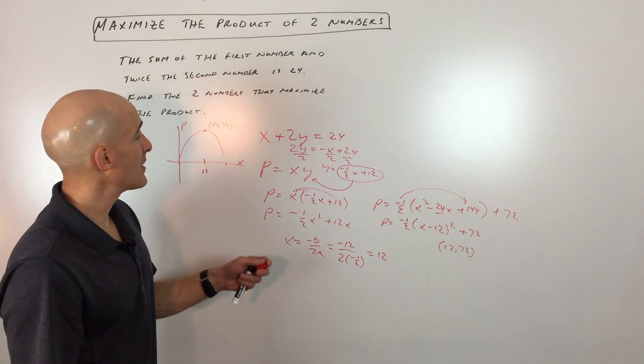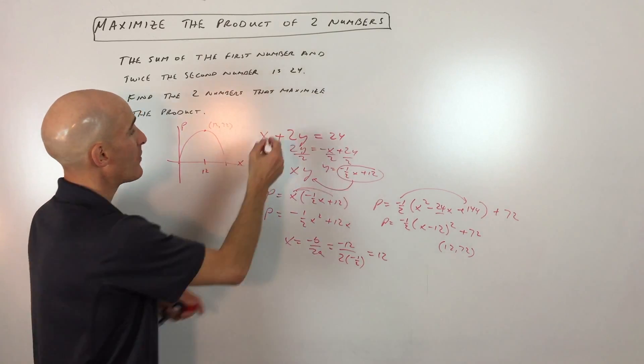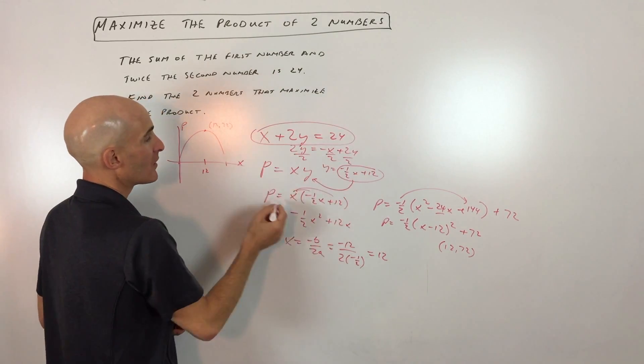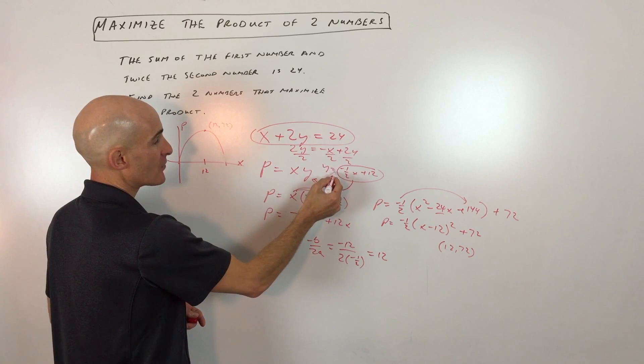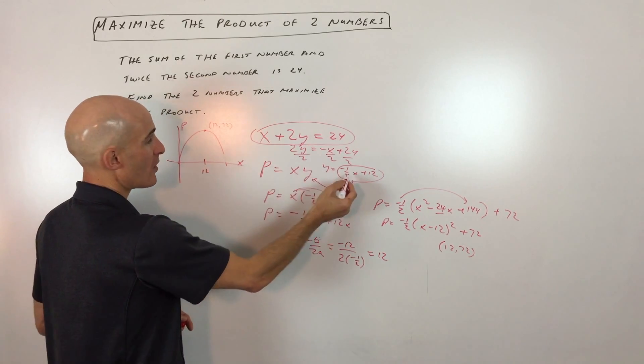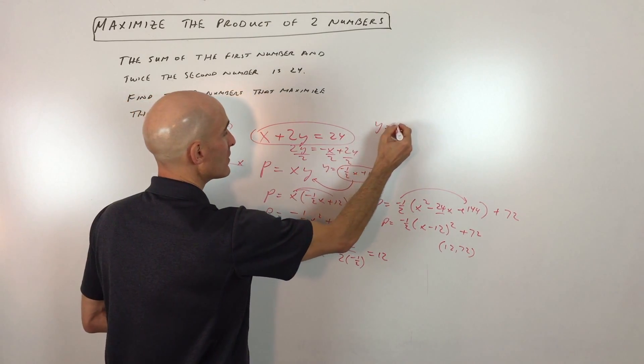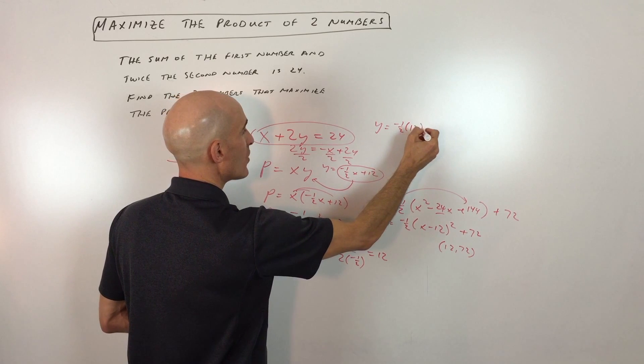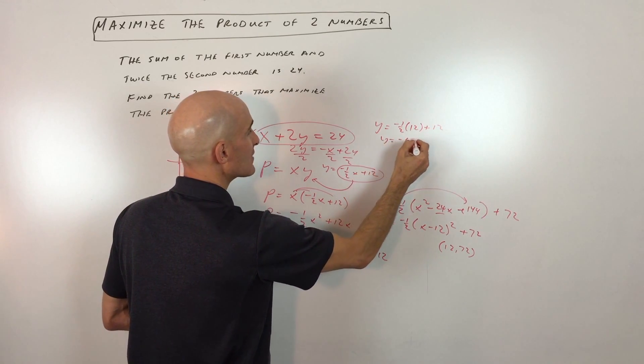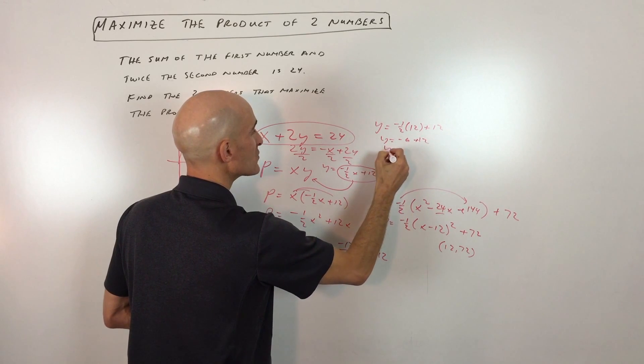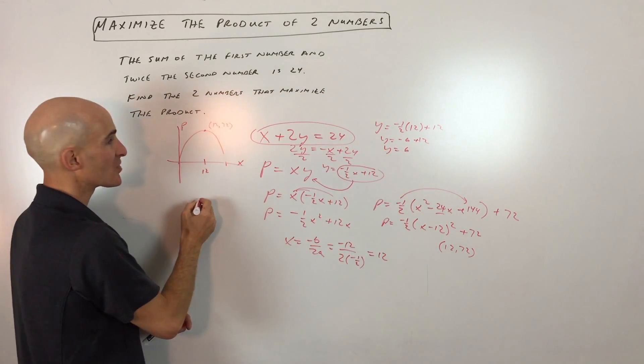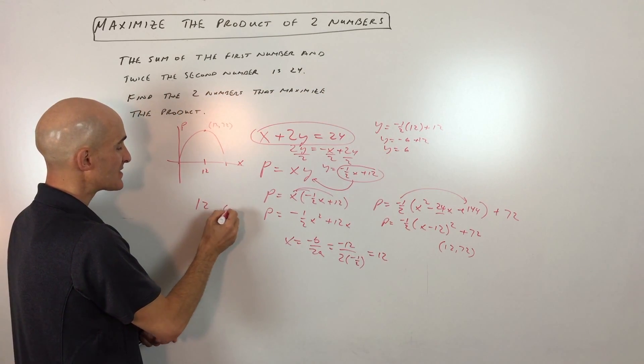Now if we want to find that second number y, what you can do is go back to this original equation that we wrote, or the variation of it right here, and substitute 12 in for x. So if we do that, we get y equals negative one-half times 12 plus 12, which gives us negative 6 plus 12, which means that y equals 6. So our two numbers are going to be 12 and 6.